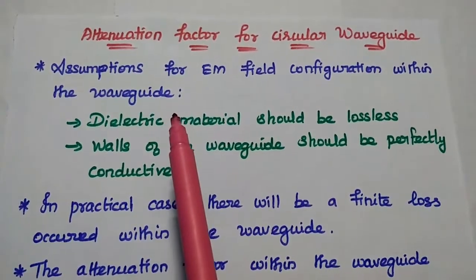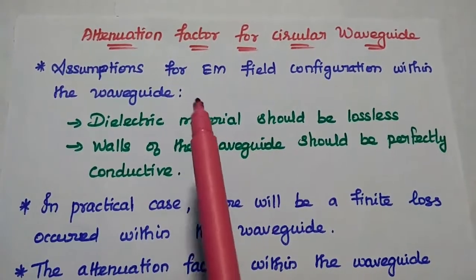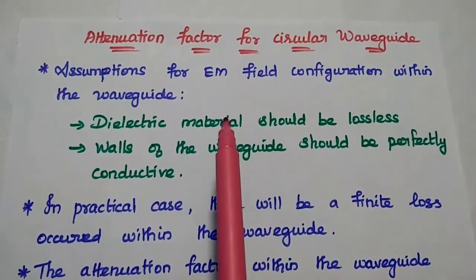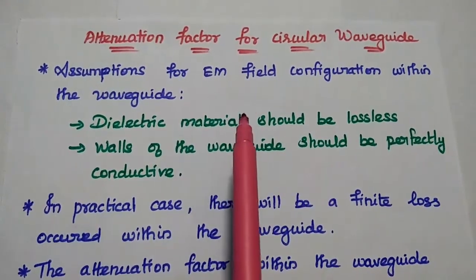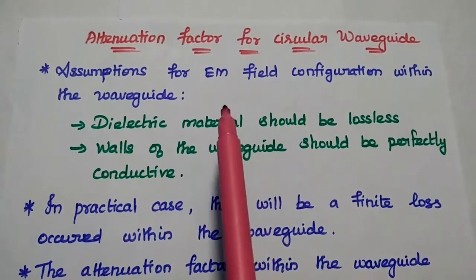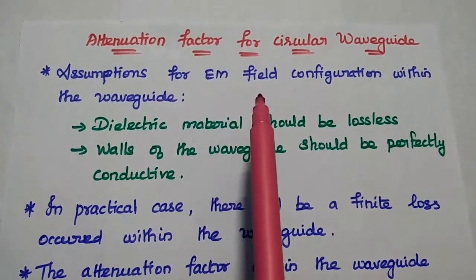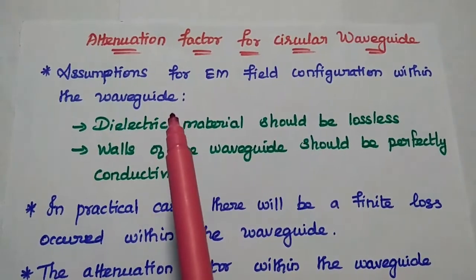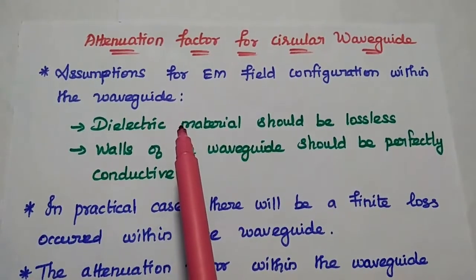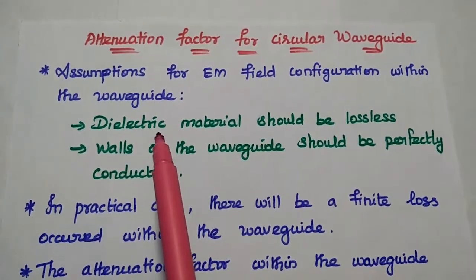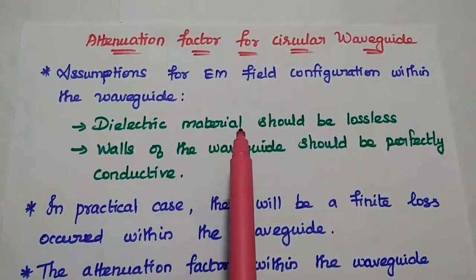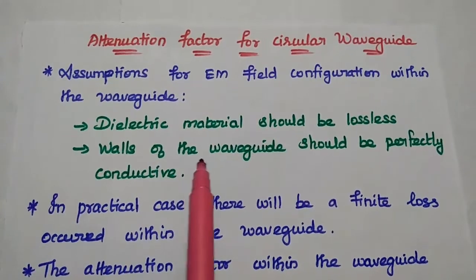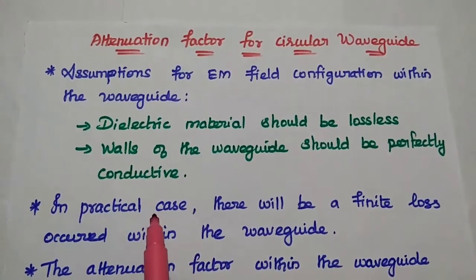Dear students, now we are going to discuss the attenuation factor for circular waveguide and its derivation for TE waves and TEM waves. In order to determine the electromagnetic field configurations within the waveguide, we have to make two important assumptions. The first one is the dielectric material should be lossless. The next one is the walls of the waveguide should be perfectly conductive.